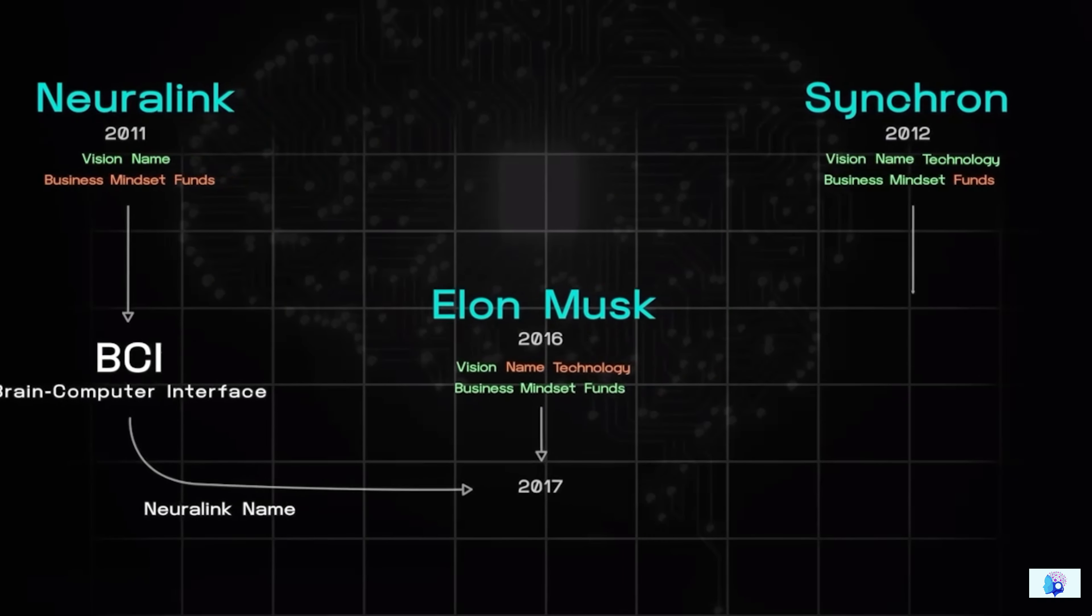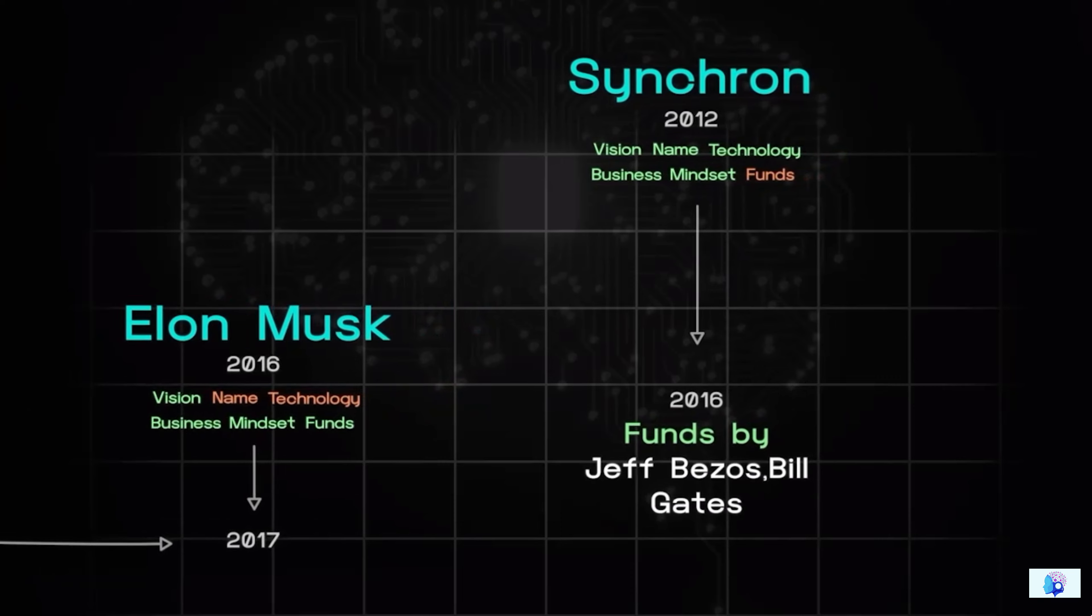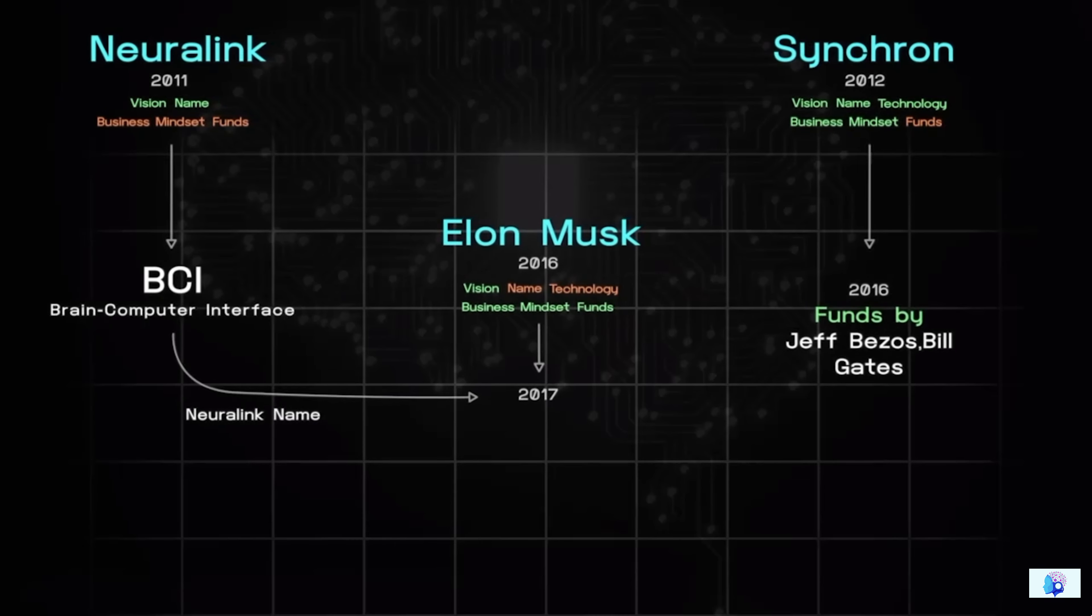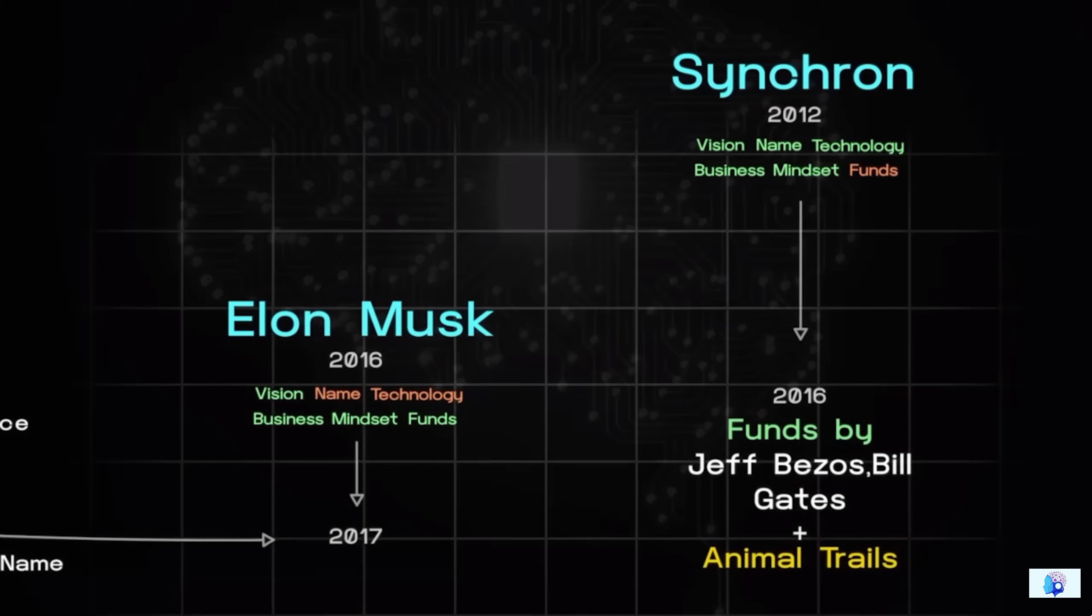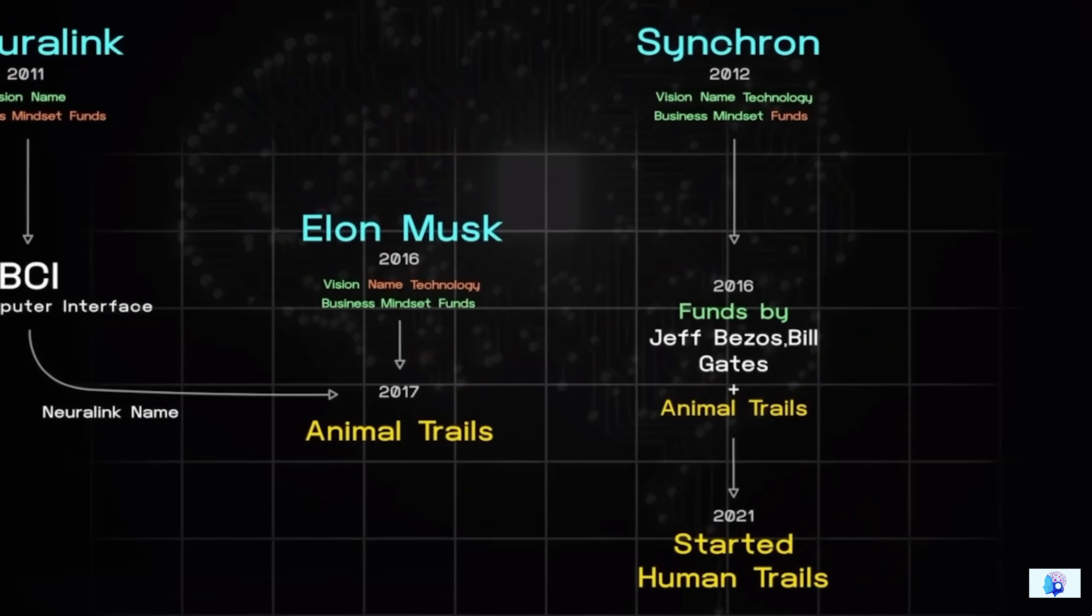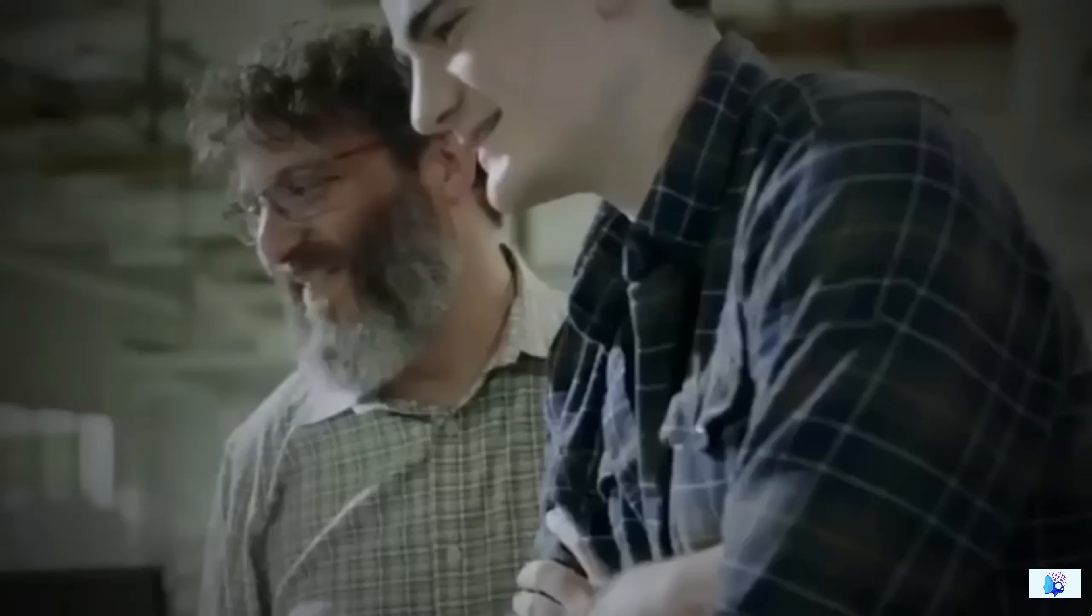On the other hand, when Elon Musk was thinking of moving ahead of his competitors, his competitors were also thinking of removing him from the competition. So, just a few months before acquiring the name Neuralink, Musk's competitors Jeff Bezos and Bill Gates began funding Synchron, which was established in 2012, so that they could move ahead of Neuralink. And they started getting an edge. The year Synchron received funding, the same year they successfully completed their animal trial, and by 2021, this company had also started human trials.